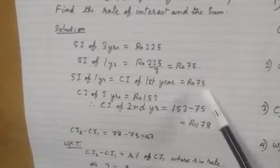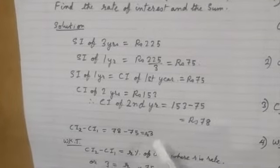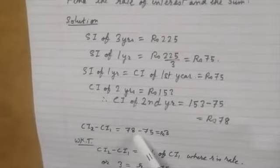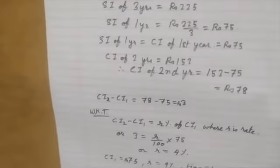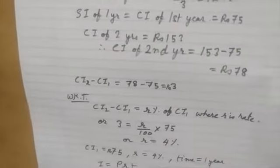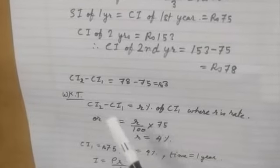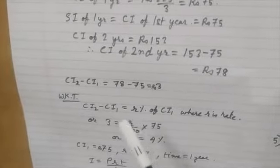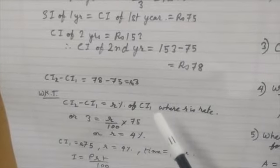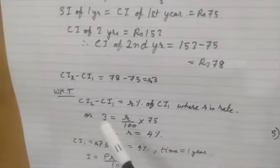Now you see there is a difference between compound interest of the second year and first year: CI2 minus CI1 is 78 minus 75, which is rupees 3. We know that CI2 minus CI1, the difference between the interest of two successive years in compound interest, is equal to the rate percent of the compound interest of the first year.